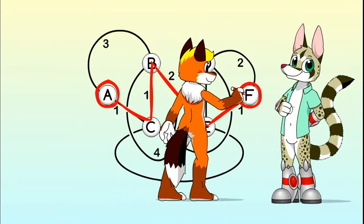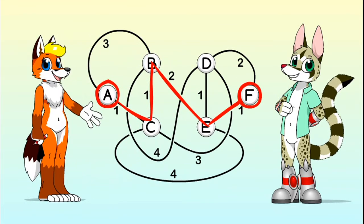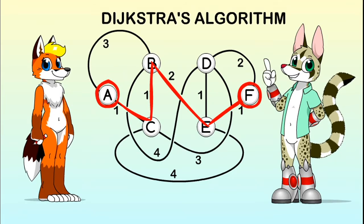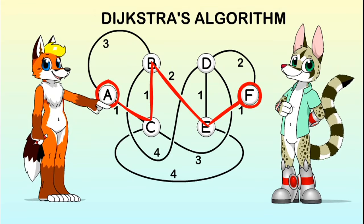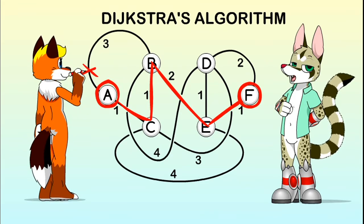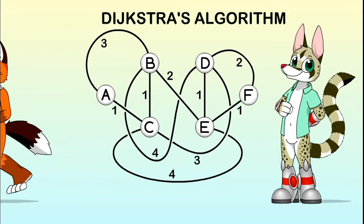But if we use weighted graphs, the simplest method to find the shortest path between two vertices is Dijkstra's algorithm. This algorithm analyzes every possible route from a starting point to a goal, choosing always the lightest edges and discarding the heavier ones. Let's see how it works with an example.